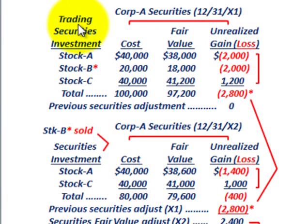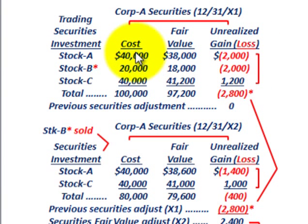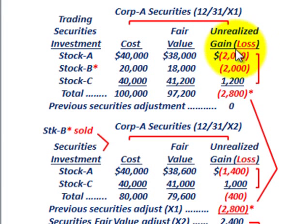Starting with year X1, we take our trading securities and look at them as a total group, comparing the cost of those securities versus their fair value to determine any unrealized holding gains or losses. These are securities that haven't been sold, so there are going to be some unrealized gains or losses sitting in these securities.